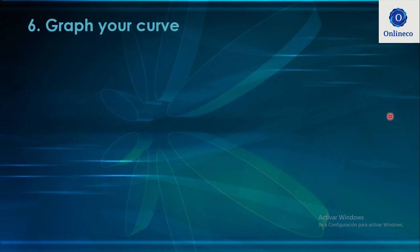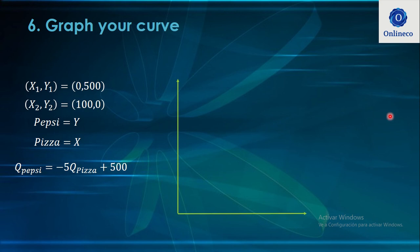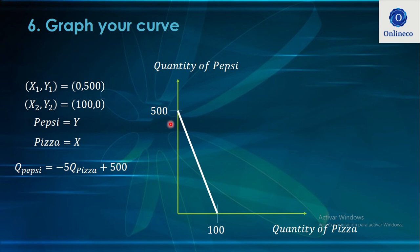To graph the curve: label the Y-axis as quantity of Pepsi and the X-axis as quantity of pizza. Plot the two extreme points — when pizza is zero, Pepsi is 500; when Pepsi is zero, pizza is 100. Since this is a linear curve with a constant slope, just two points are enough. Connect them and you have your budget constraint graph. Hope you enjoyed this video — see you next time!